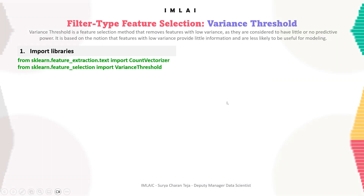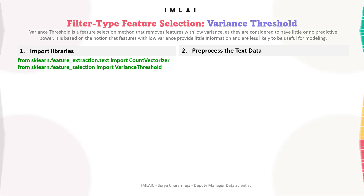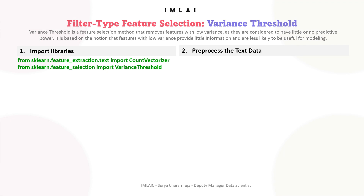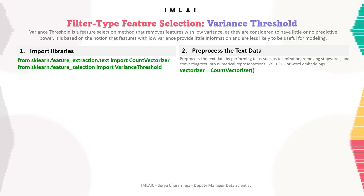Step two is to pre-process the text data by performing tasks such as tokenization, removing stop words, and converting text into numerical representations like TF-IDF or word embeddings. For that we will be using the CountVectorizer class object.